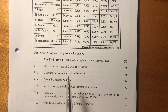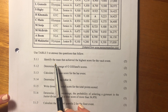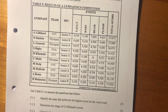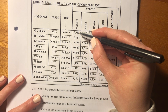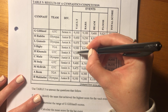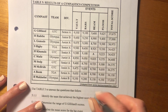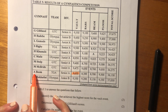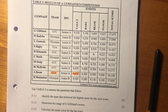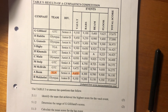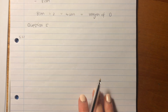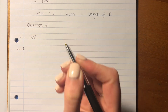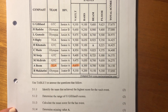Use table five to answer the questions that follow. The first question asks: identify the team that achieved the highest score for the vault event. Looking down the vault column, the highest score belongs to TGA. So the team with the highest vault score was TGA.